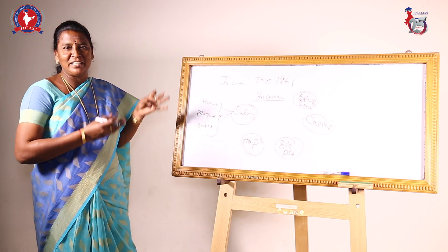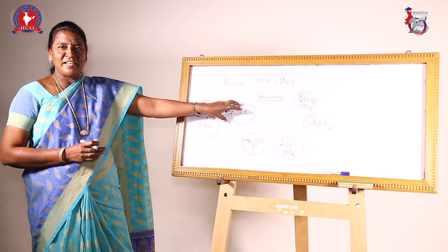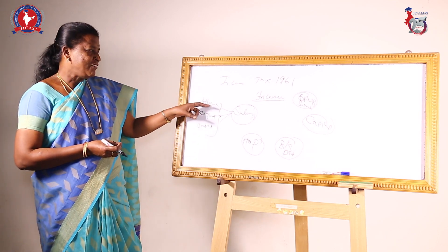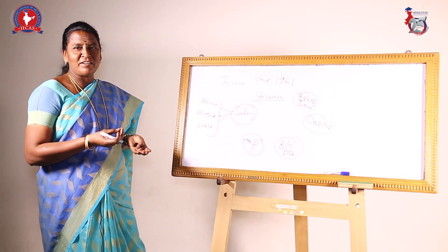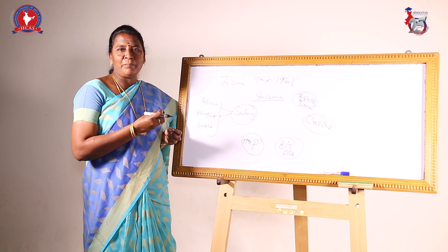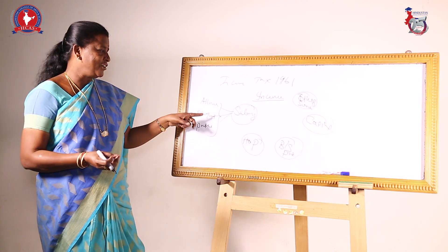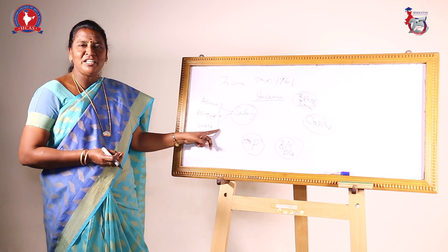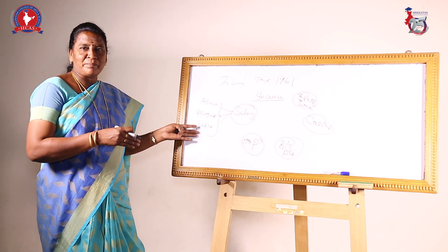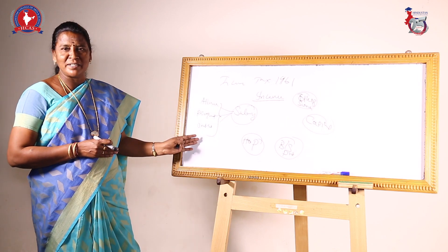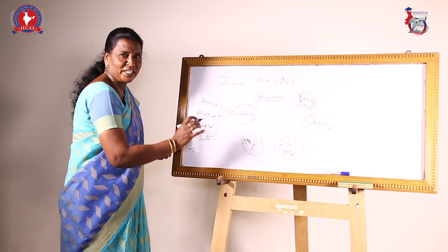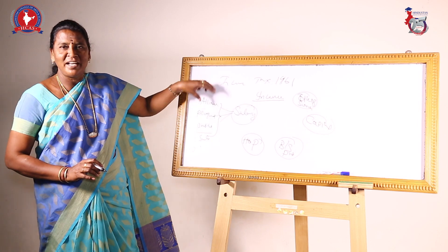After adding these 3 elements, we get the gross salary income. From the gross salary income, there are 2 deductions: standard deduction and entertainment allowances. Allowances include dearness allowance, house rent allowance, and more. Perquisite is anything received from the employer in kind, not in cash. Profit in lieu of salary is anything received from a past or present employer, like pension or encashment of leave. After deducting these, you get the net salary income.